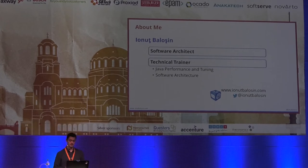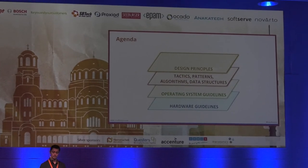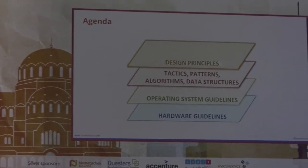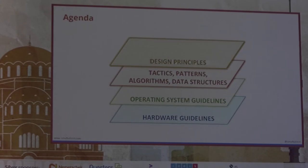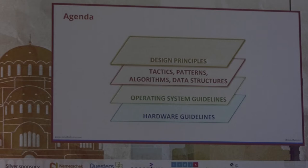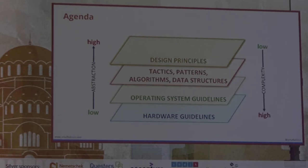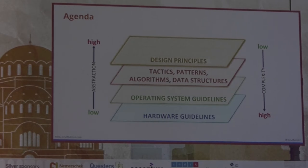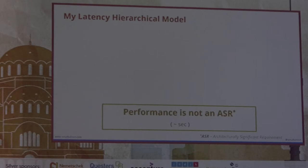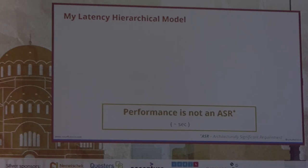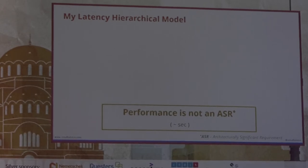How I split the presentation: I thought to have four layers of abstraction. We will start with design principles, continue with tactics, patterns, algorithms, and data structures, then reach the OS guidelines, and close with hardware guidelines. The level of abstraction increases towards the design principles, but complexity increases towards the hardware level. The aim of this presentation is to zoom inside these layers and study from a performance standpoint what matters in our applications.